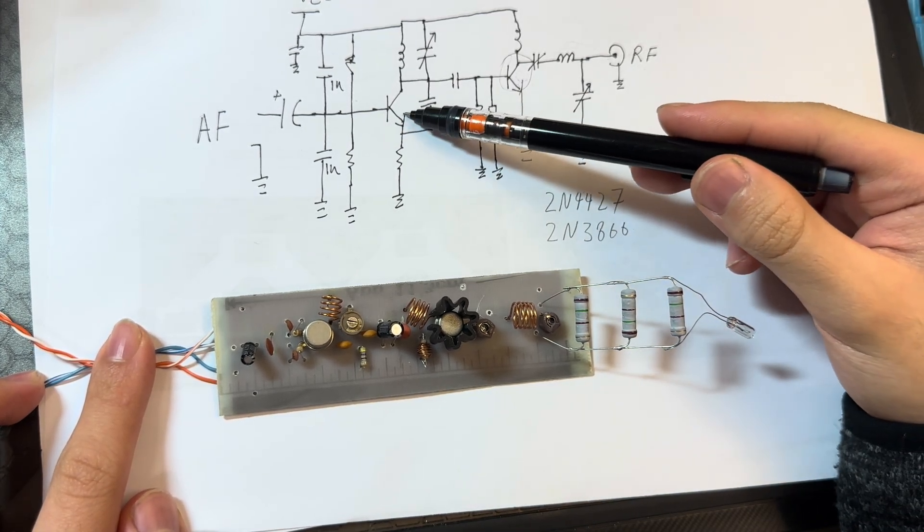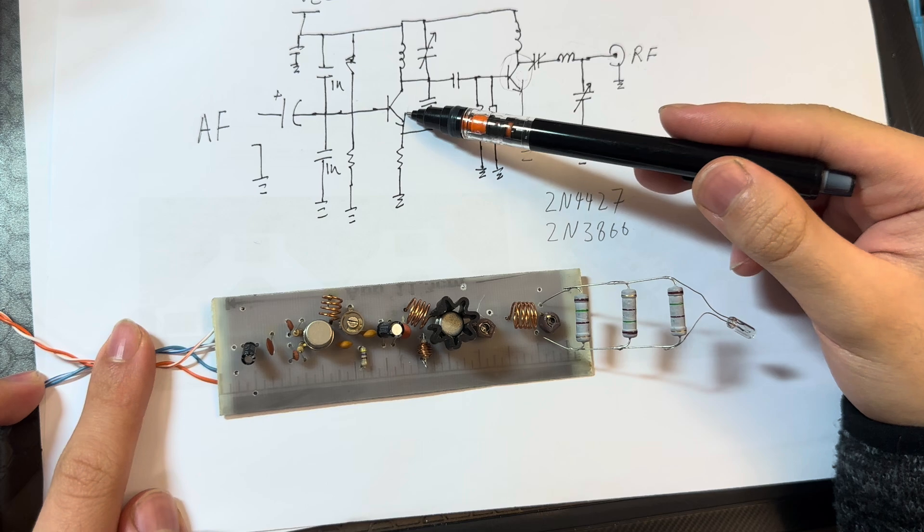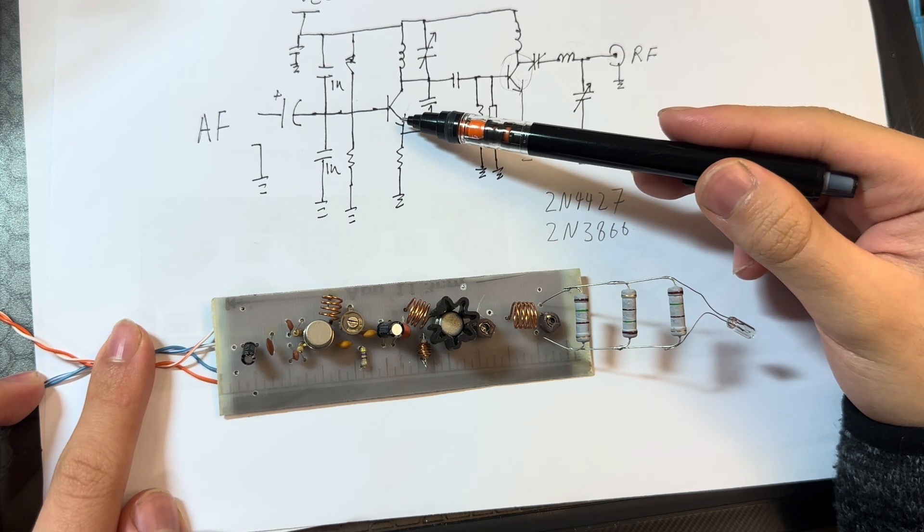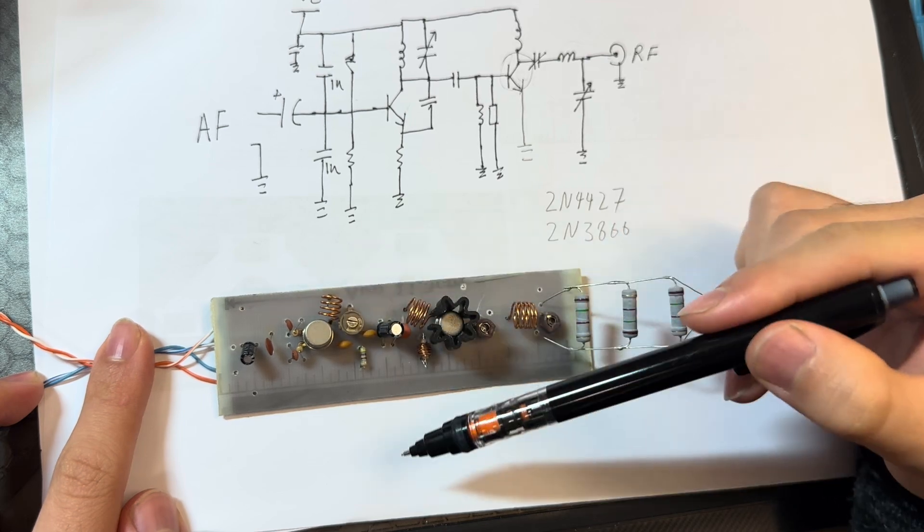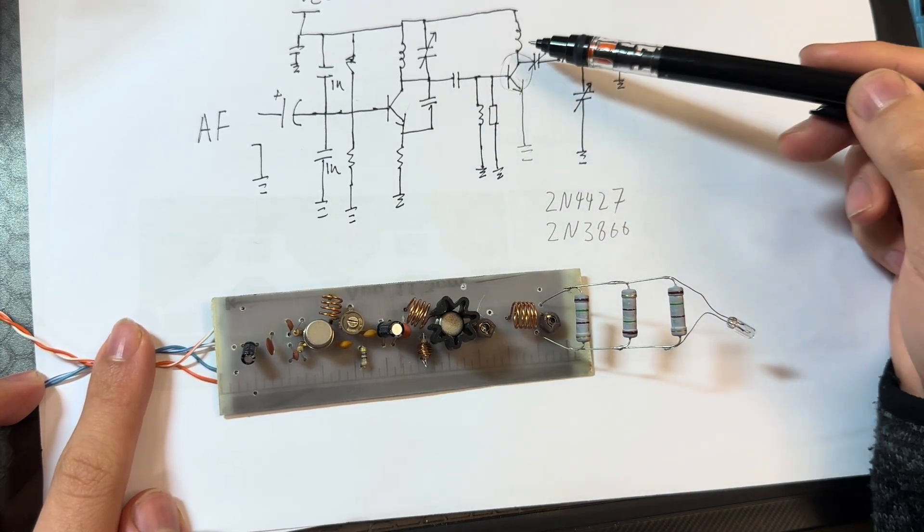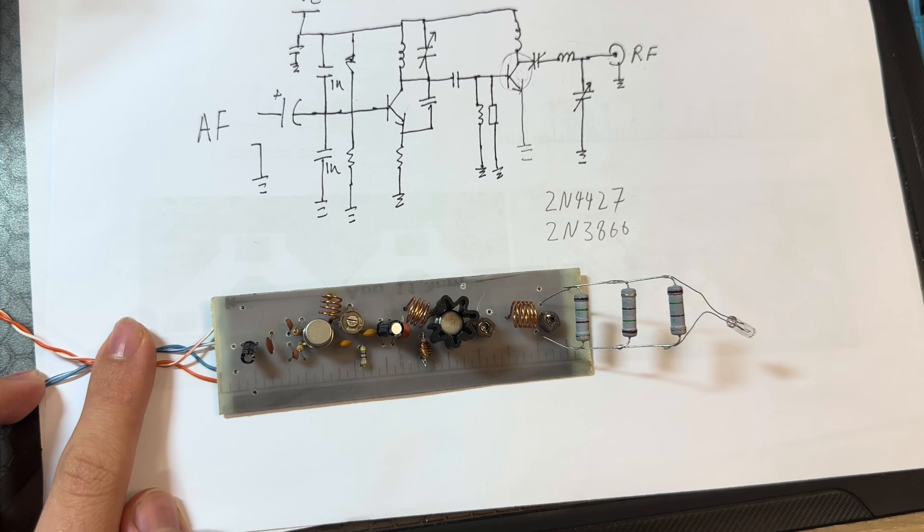For the transistor oscillator itself, it's so versatile. Any small power signal transistor can be used for this oscillator portion of the circuitry. But for amplifiers, you might want to use something more specialized.